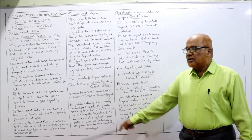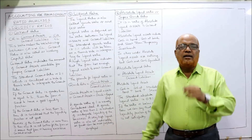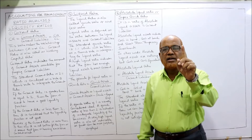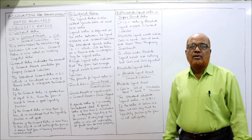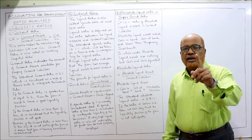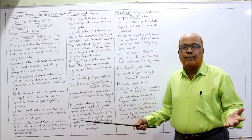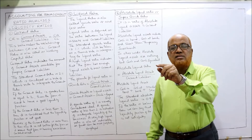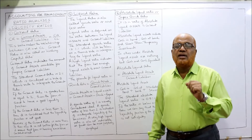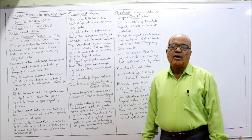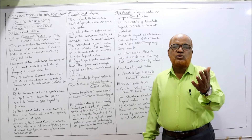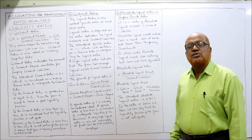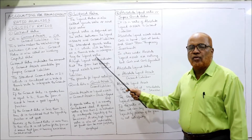The standard quick ratio is 1:1, unlike the current ratio standard of 2:1. This means for every 1 rupee of current liability, the business must have at least 1 rupee of quick or liquid assets. If the liquid ratio is less than 1 — for example 0.6:1 or 0.7:1 — the liquidity position is not good. If it is more than 1, such as 1.5:1, that is good. The minimum standard is 1:1.